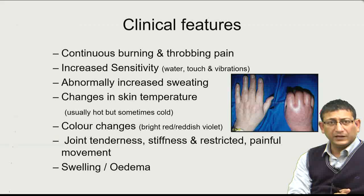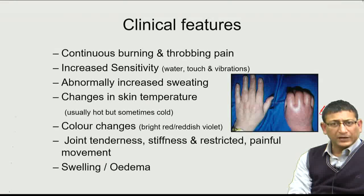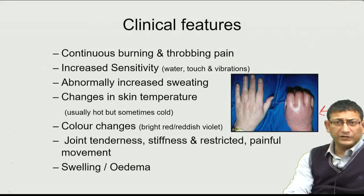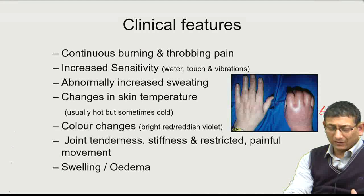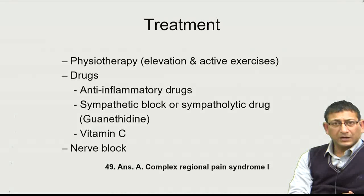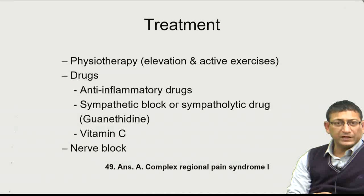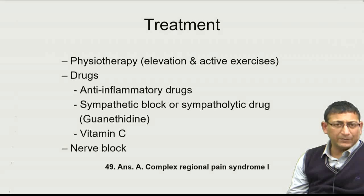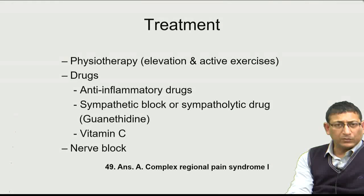There will be increased sweating in the area and skin color changes to blue or red. Joint stiffness occurs due to swelling and restriction of movement. These features are seen in Sudeck's osteodystrophy, or complex regional pain syndrome. The main treatment is physiotherapy — reducing edema with compression bandage and elevation, and mobilizing the joint with active exercises. Drugs include anti-inflammatories or nerve-soothing agents like pregabalin or gabapentin, and blocking the sympathetic nervous system.